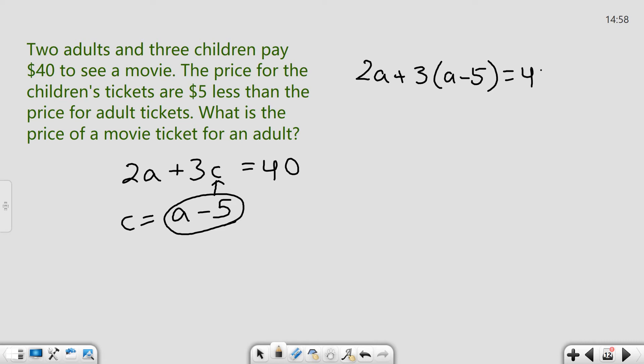Now I have a multi-step equation which involves the distributive property and I can start solving that. I'm going to take the 3 and multiply it by each value inside parentheses because that's how the distributive property works. So I have 2A plus 3A minus 15 equals 40. Remember 3 times a negative 5 is a negative 15, which basically turns into a minus sign.